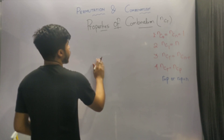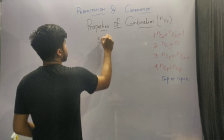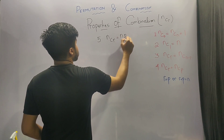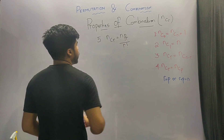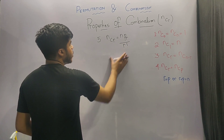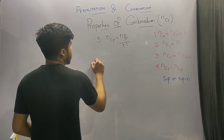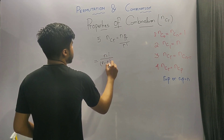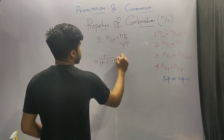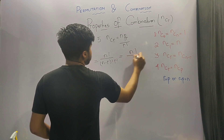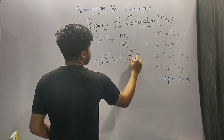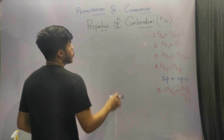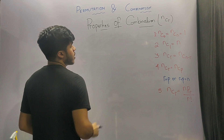The fifth property of combination is that nCr is equal to nPr divided by r factorial. Upon expanding, n factorial upon n minus r factorial into r factorial is equal to n factorial upon n minus r factorial into r factorial, which confirms the identity.